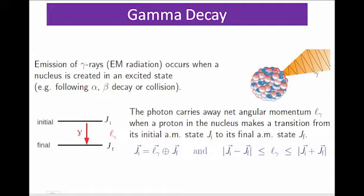Normally, gamma emission is a continuation of alpha decay and beta decay. After alpha and beta decays, if the nucleus is in a higher energy state, in order to attain stability it must emit its extra energy. This extra energy comes out from the nucleus in the form of gamma rays. After gamma emission, the nucleus returns from the higher energy level back to its most stable final position by the emission of one or more gamma rays.